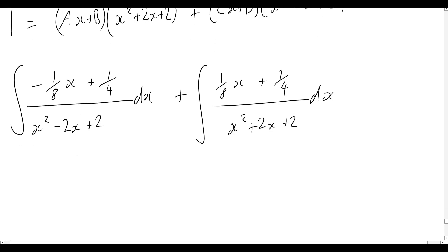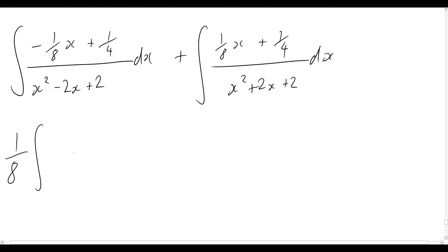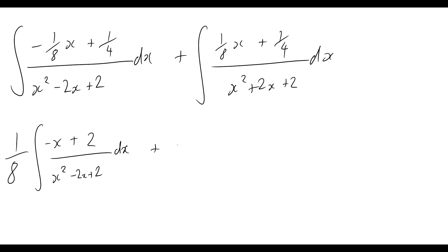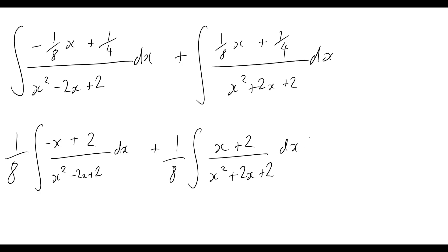We can take out a factor of 1/8 to neaten up our integrals. That gives us (1/8) times the integral of (−x + 2) over (x squared minus 2x plus 2) dx, plus (1/8) times the integral of (x + 2) over (x squared plus 2x plus 2) dx.